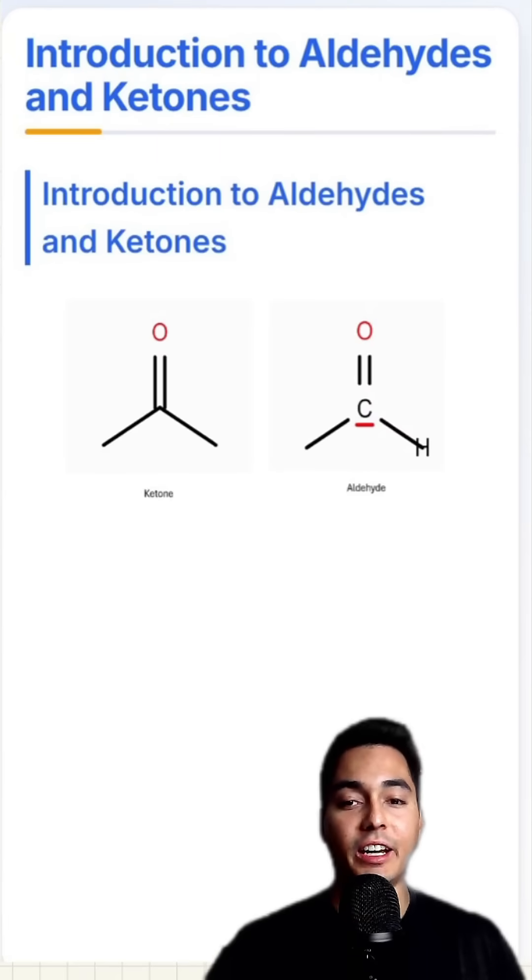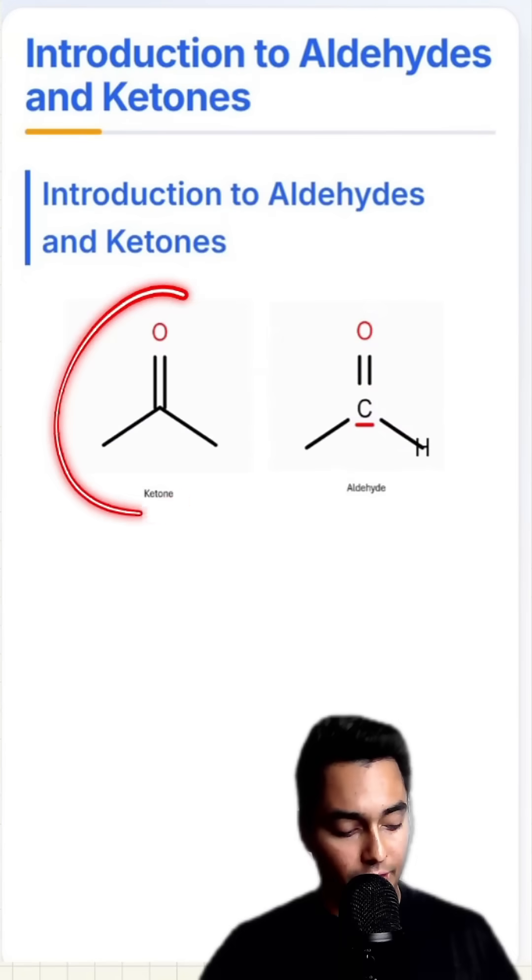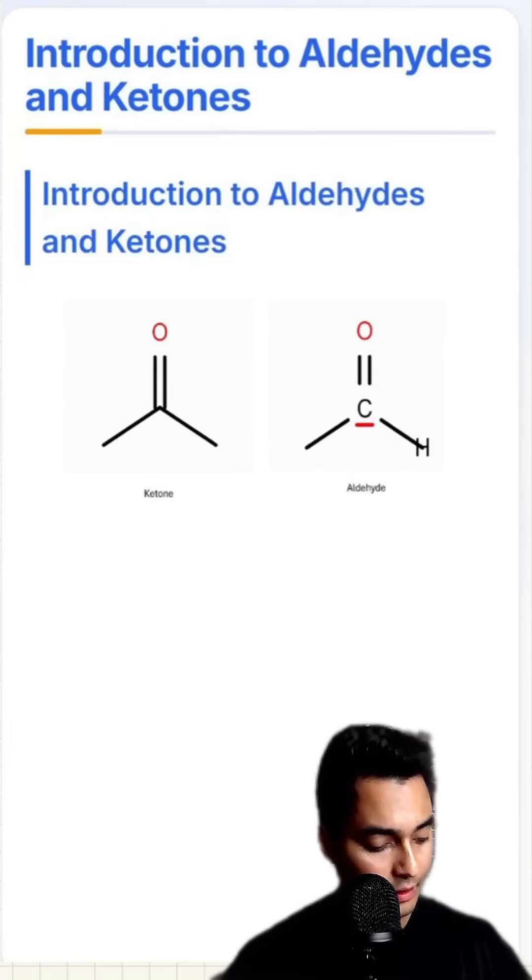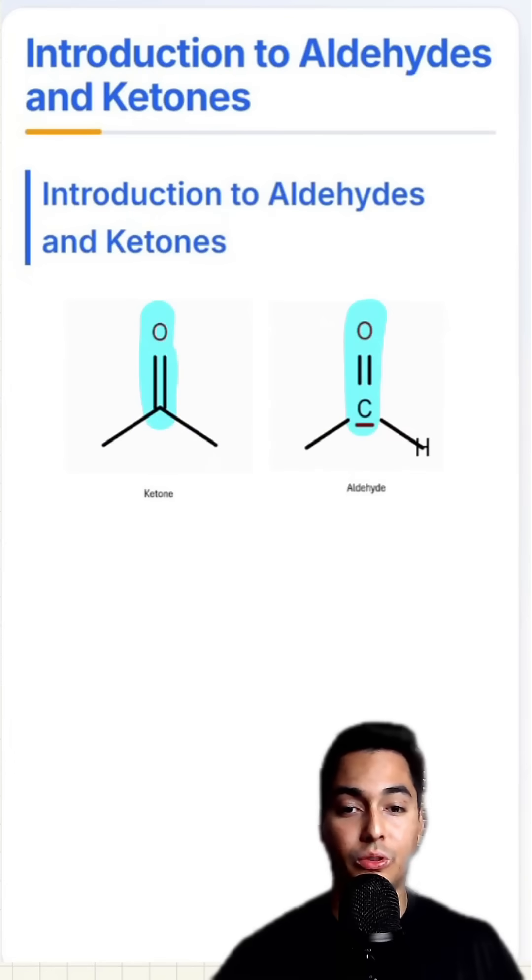What's the difference between an aldehyde and a ketone? This compound on the left is called a ketone, whereas this compound on the right is called an aldehyde. They both have a carbonyl group, which means they both have this double bond O to carbon.